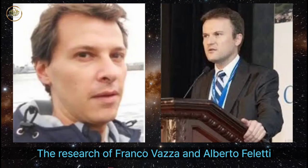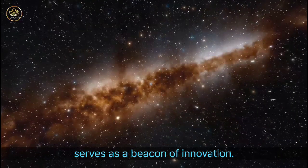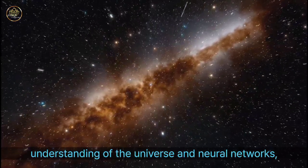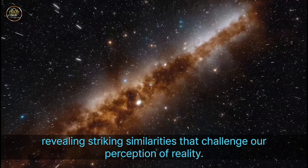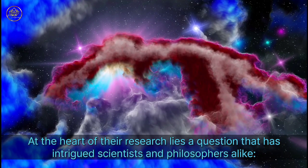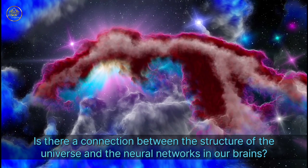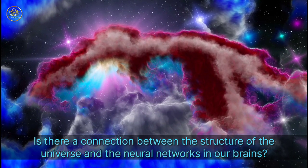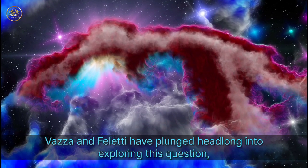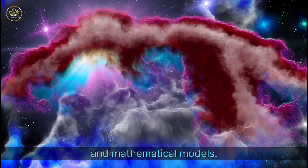The research of Franco Vasa and Alberto Felletti serves as a beacon of innovation. Their pioneering work has opened new doors in our understanding of the universe and neural networks, revealing striking similarities that challenge our perception of reality. At the heart of their research lies a question that has intrigued scientists and philosophers alike: is there a connection between the structure of the universe and the neural networks in our brains? Vasa and Felletti have plunged headlong into exploring this question.